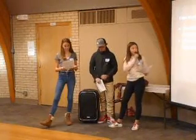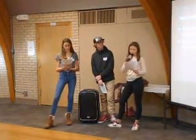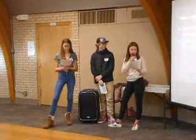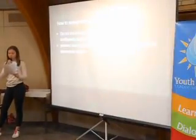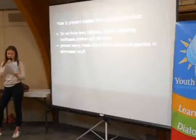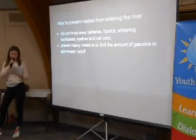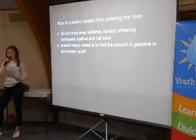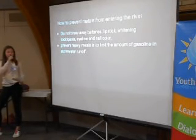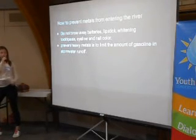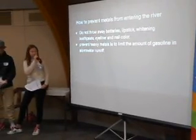To help prevent metals from reaching our river, try not to throw away products such as broken batteries that contain chromium or broken thermometers that contain mercury. Other products such as lipstick, whitening toothpaste, eyeliner, and nail color also contain some heavy metals. Another way to prevent heavy metals from reaching our rivers is to limit the amount of gasoline and stormwater runoff from different types of transportation.